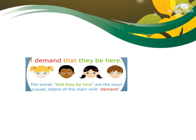Let's take this example: 'I demand that they be here.' The words 'that they be here' are the Noun Clause — it is the object of the main verb 'demand.' 'That they be here' is your dependent or Noun Clause. It cannot stand alone.